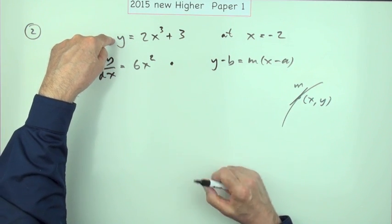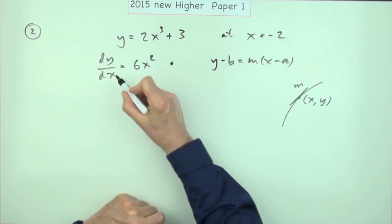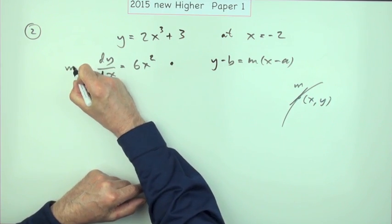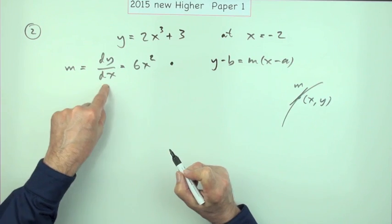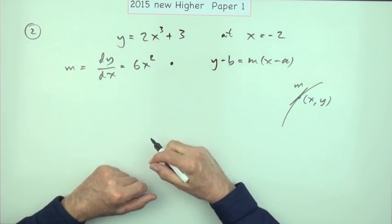Now you've got your two equations. This is the y equation to work out the y coordinate, this is the gradient equation to work out the gradient. In fact, quite often when you write that, the first thing you should write is the gradient is given by dy/dx which equals that.